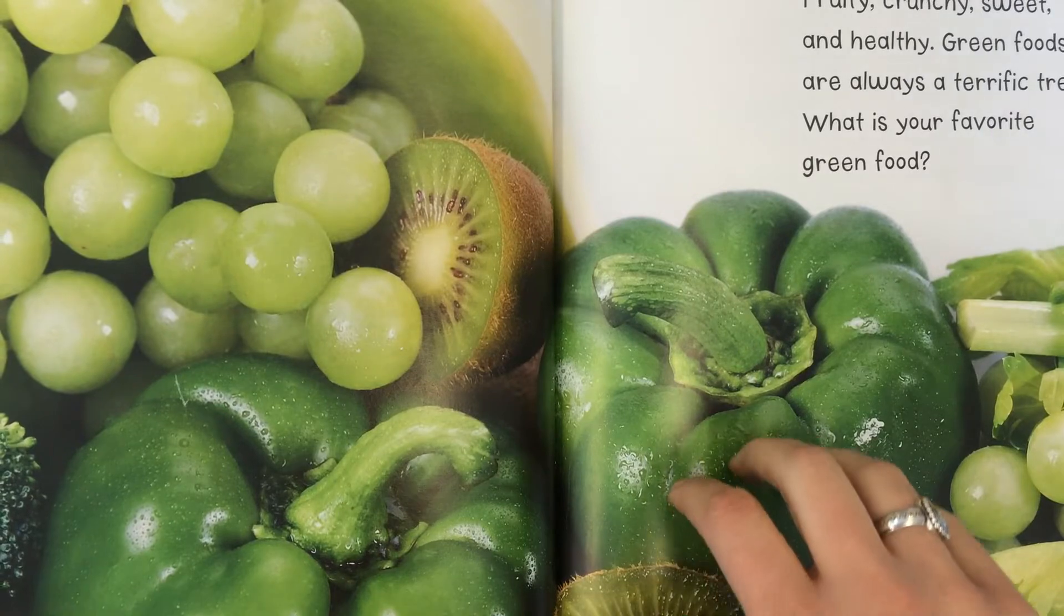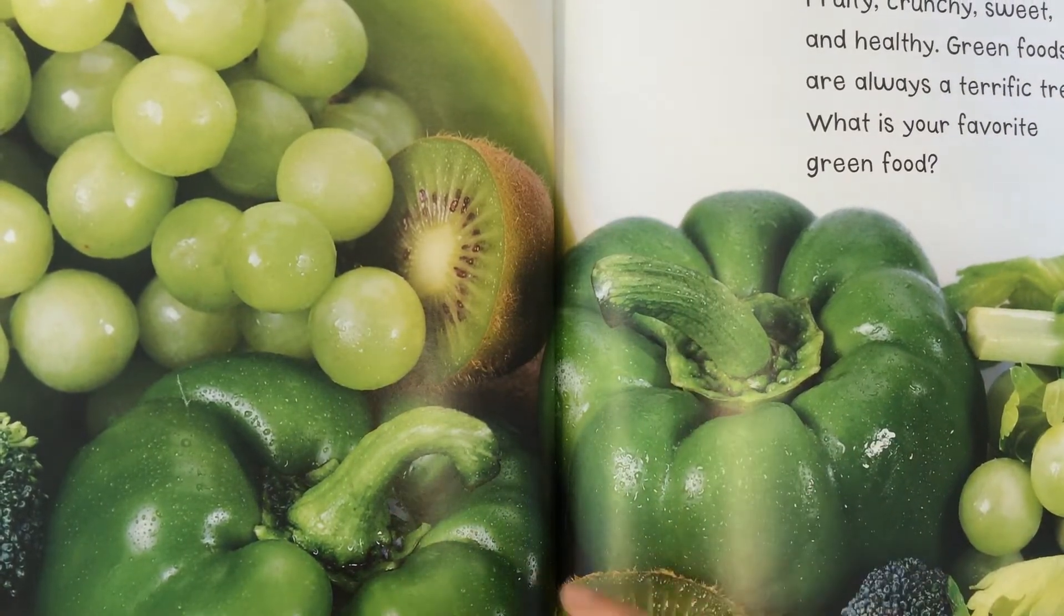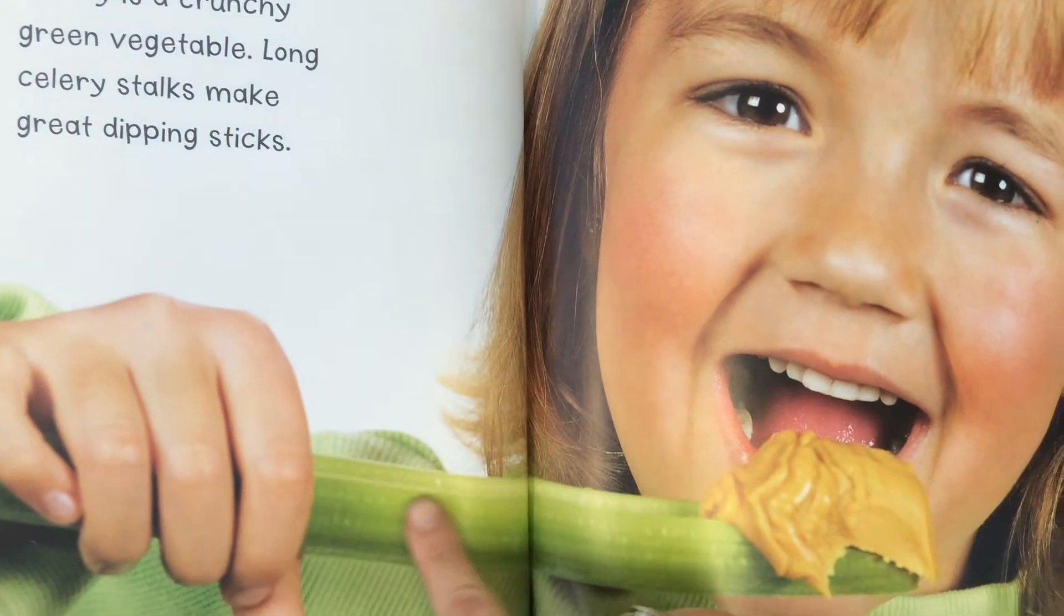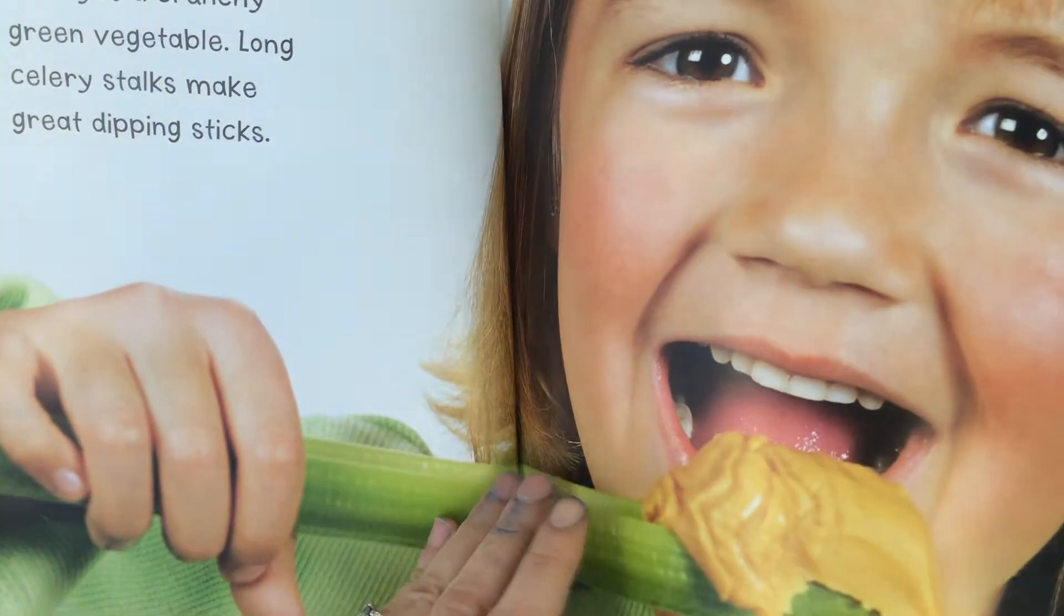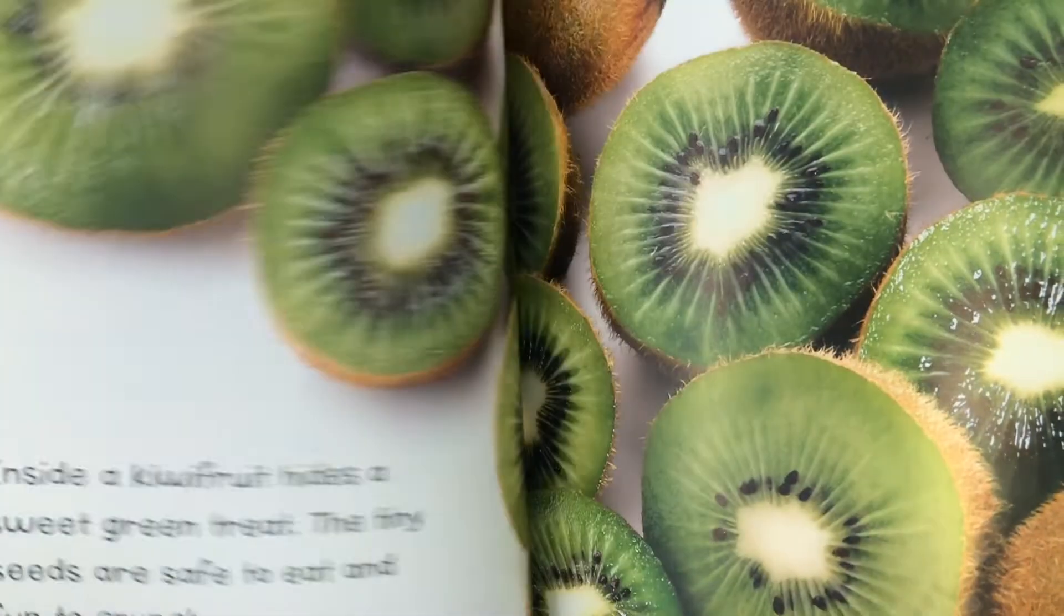Peppers. Sometimes we eat those on pizza. And then this has got the other fruits that we saw on the first page. Sometimes you might eat celery with some peanut butter on it. It's a crunchy vegetable. It's a great dipping stick. Here's the kiwi again.